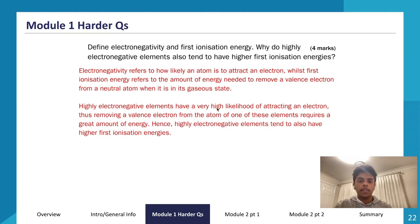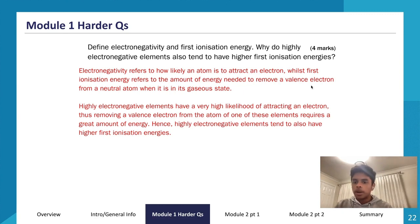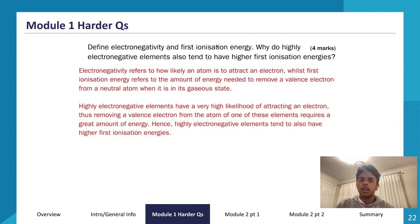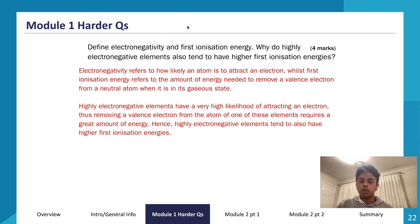The second paragraph gives us two marks and the first paragraph gives us two marks, for a total of four marks. For four to five mark questions you might want to draw a diagram, but in this case it's difficult to draw one for electronegativity and first ionization energy without it taking too much time. Use your own discretion on when to include diagrams. Hopefully you feel confident about answering Module 1 questions like these.